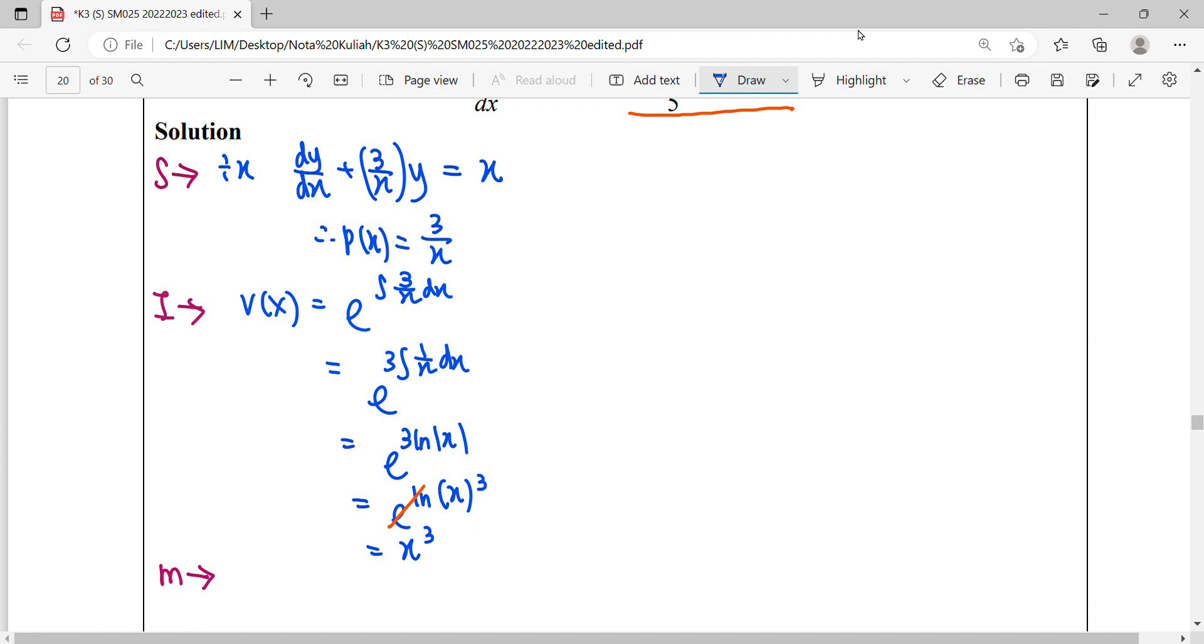Third step: rewrite our equation by multiplying this integrating factor x³ throughout. Multiply x³ by each term. For the right-hand side, x³ times x becomes x⁴.